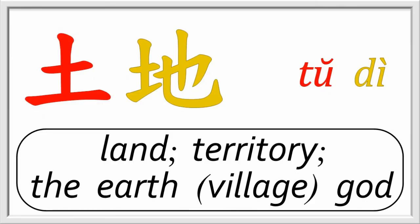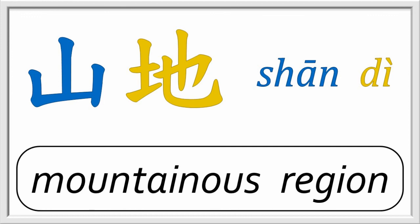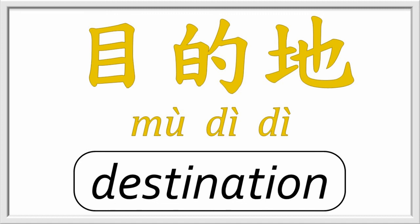In Lesson 10, when explaining the character to sit, zuò, we learned that the earth tǔ that appears between two people having a discussion actually represents the earth or village god. The two individuals are presenting their case before the earth god. In an agricultural society such as China, the earth god holds an especially important position. So the expression for territory, land, or the earth god is tǔdì. A place name would be dìmíng in Chinese. Shāndì would be a mountainous region or area. Dì xià shuǐ is literally underground water. And mùdìdì would be our destination — literally the target area of our travels.